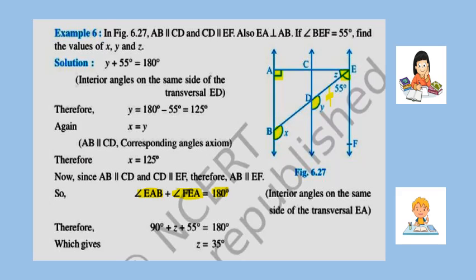To find Z: since AB is parallel to CD and CD is parallel to EF, AB is also parallel to EF. The angles EAB and FEA are interior angles on the same side of transversal EA. Angle EAB equals 90 degrees since EA is perpendicular to AB, and angle FEA equals Z plus 55. So 90 plus Z plus 55 equals 180, giving Z equals 35.